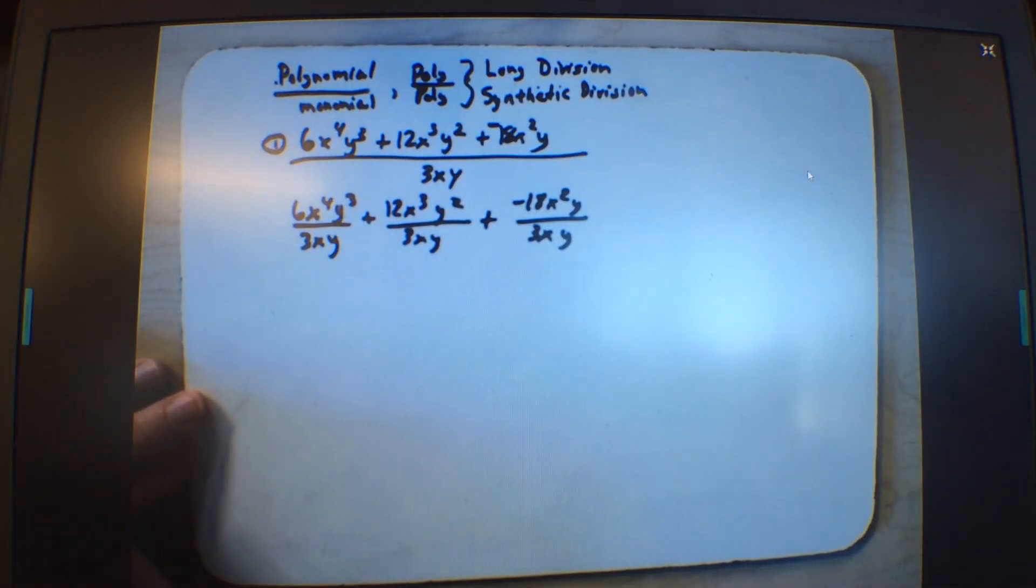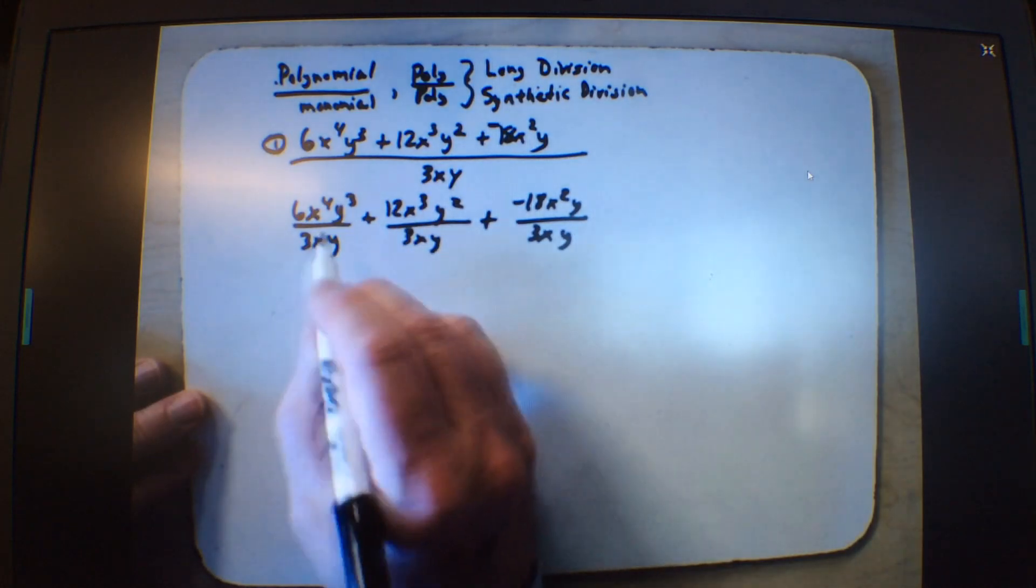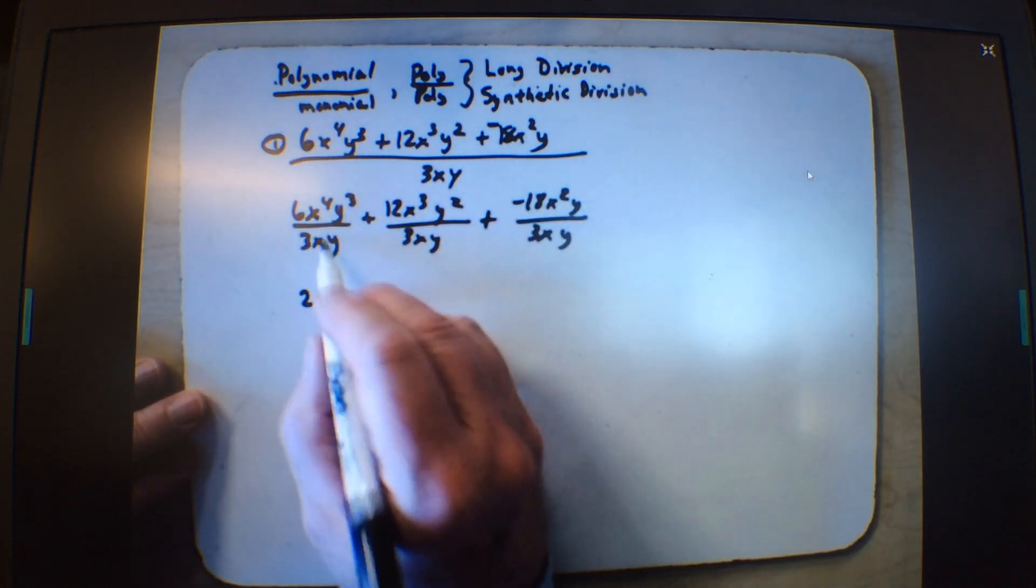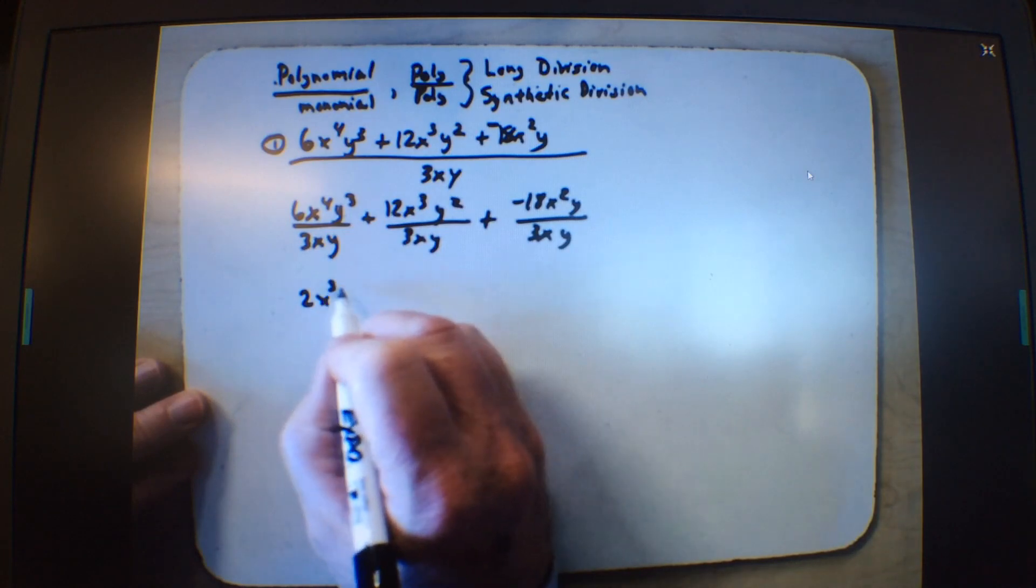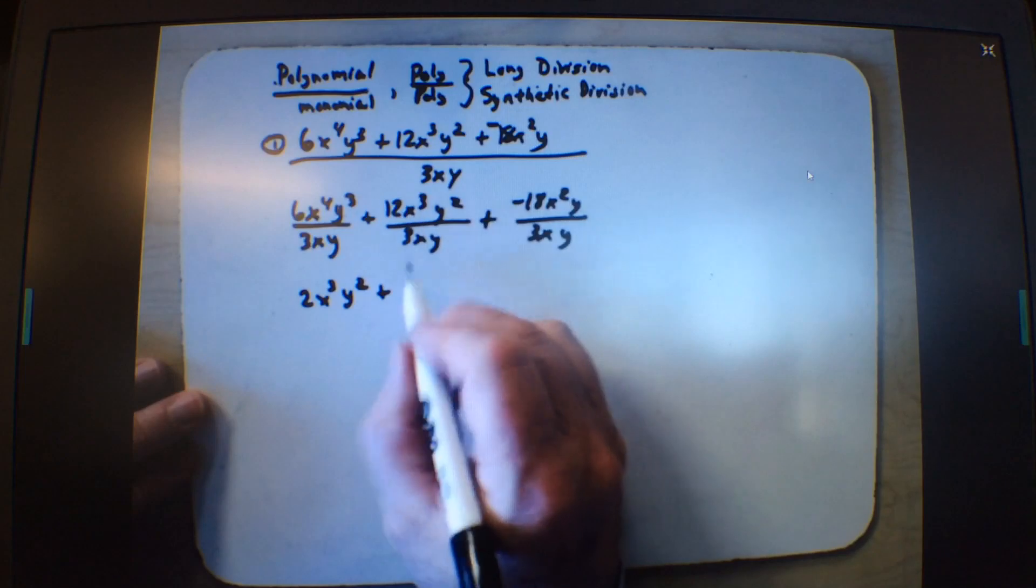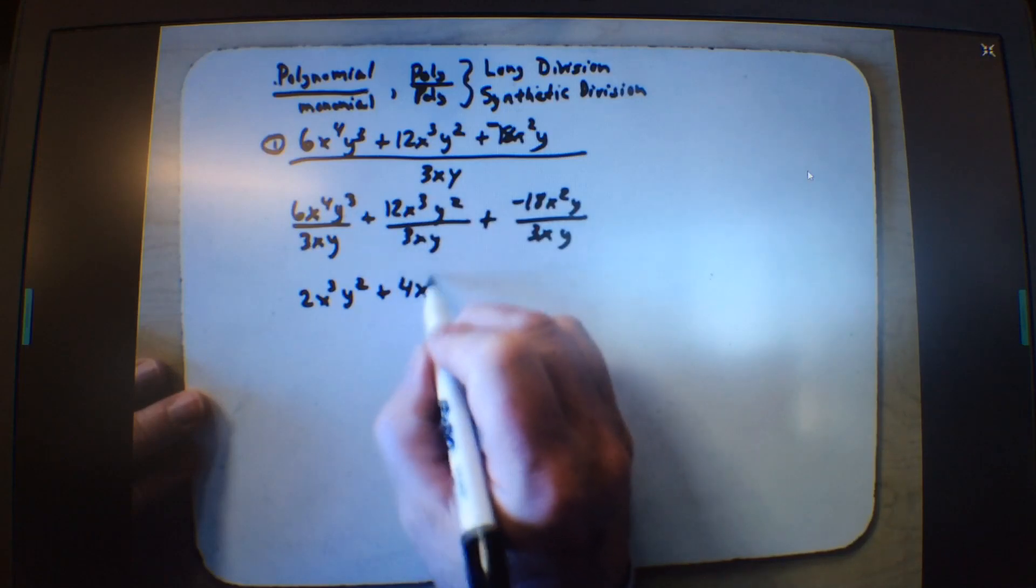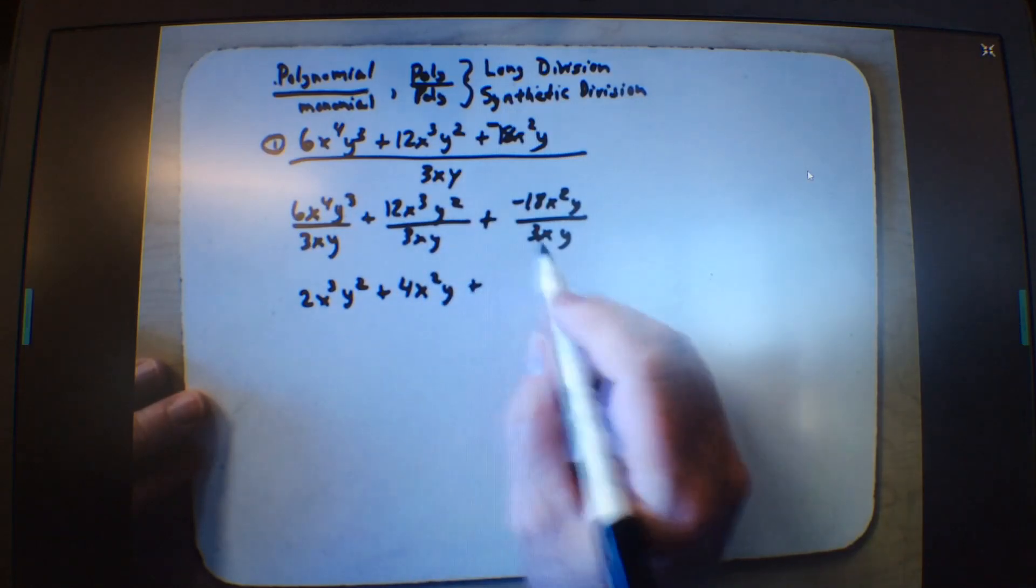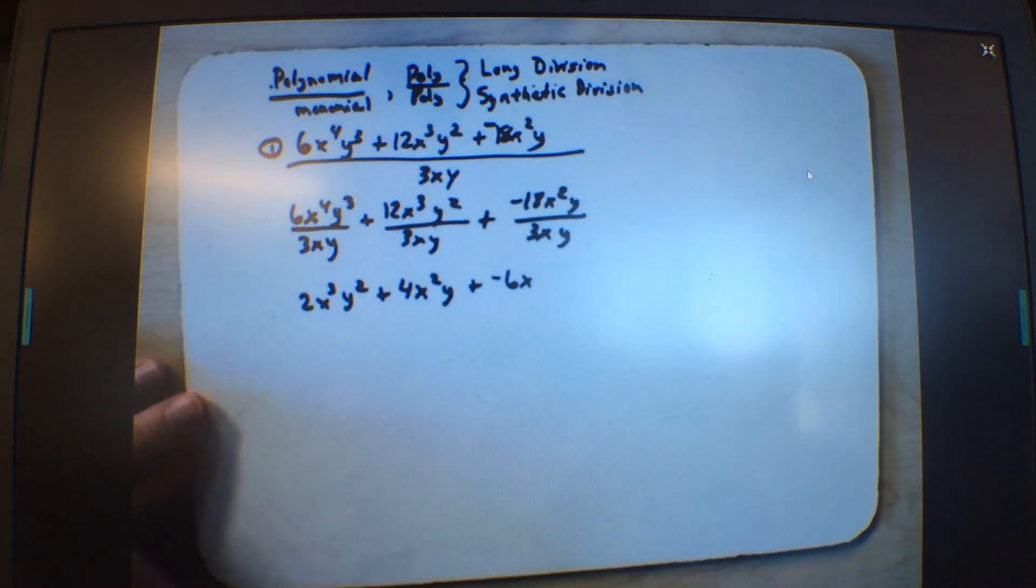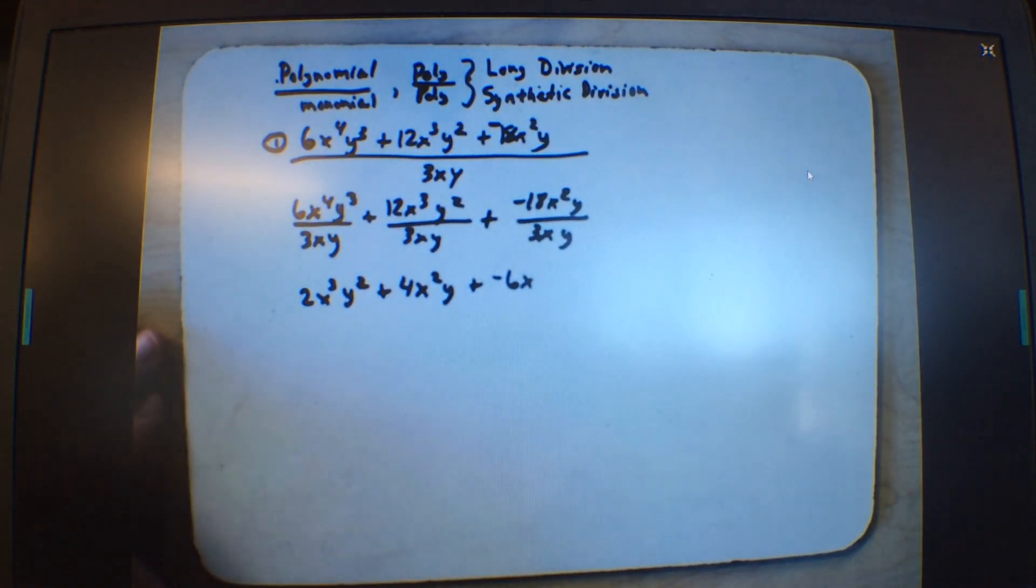Okay, and you just cancel like you would normal, so 6 divided by 3 is 2, 4 minus 1 is x to the 3rd, and then y squared, plus 4x squared, y, plus negative 6x. And I don't need the y, because if you subtract, that's 1 minus 1, which is 0.